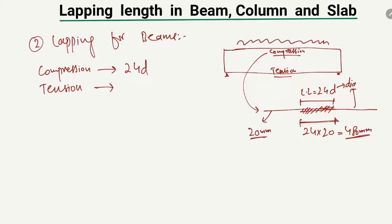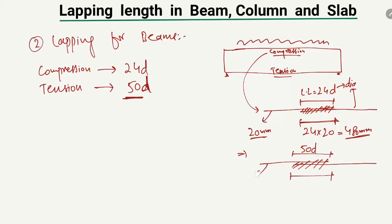For the tension zone, the formula is 50D. We mostly provide bars in the tension zone to resist tensile stresses, which is why the tension lapping length is greater than the compression lapping length. So for tension, this is one bar overlapping another, and the lapping length is 50 × D. For example, with a diameter of 20 millimeters: 50 × 20 = 1000 millimeters, or 1 meter. So 1 meter is the overlapping length for a tension bar.